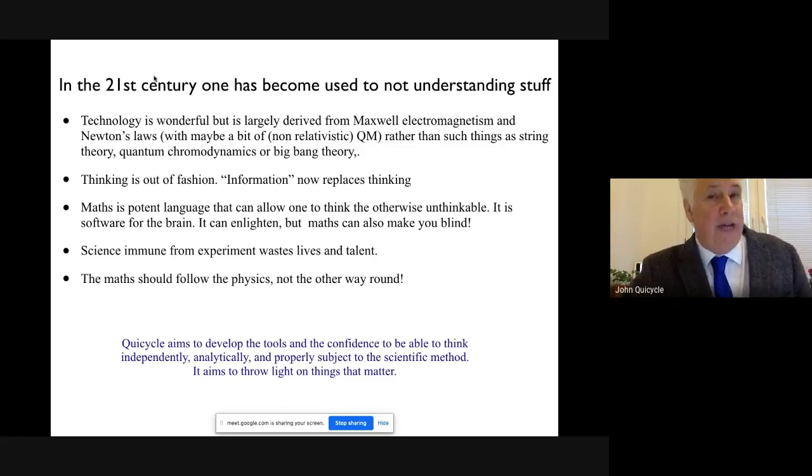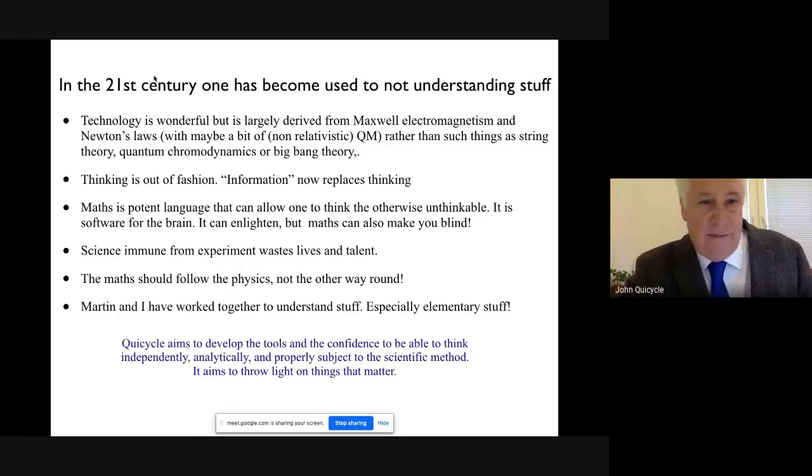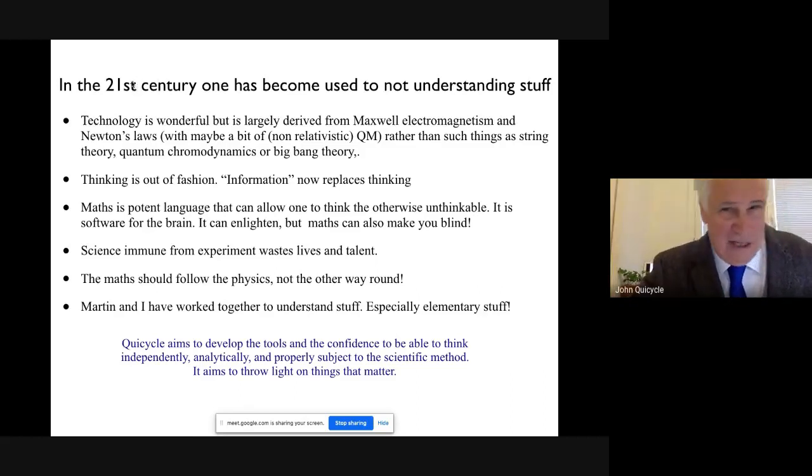Any mathematics or logical framework to describe the universe should therefore follow the physics and not the other way around. Martin and myself work for a long time, work together to try and understand things, not to have them described by somebody else or learn from a book, but to understand the fundamentals of how things work. Quasical aims to do this. It aims to develop the mathematics and the confidence to enable anyone who follows this seriously to be able to think independently, analytically, and properly, and subject to the scientific method. It aims to throw light on things that matter.